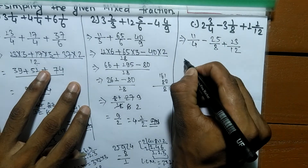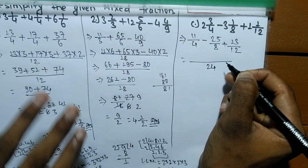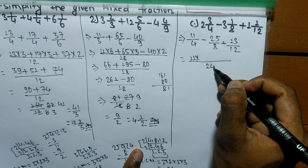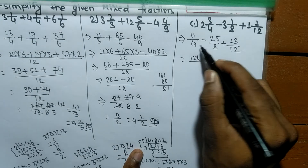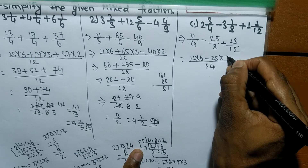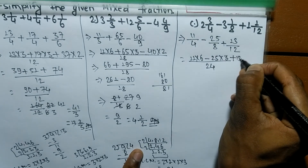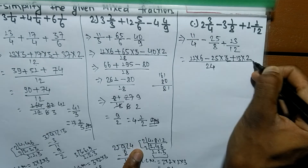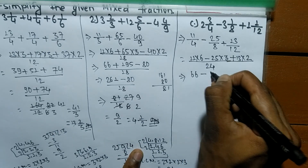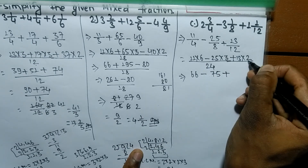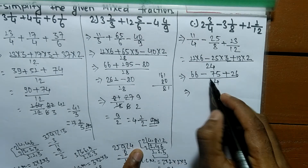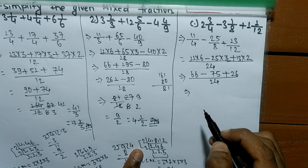Now we multiply each numerator by the quotient of LCM divided by the respective denominator. So 11 into 24 divided by 4 means it is 6, minus 25 into 24 divided by 8 means it is 3, plus 13 into 24 divided by 12 means it is 2. So now it is 11 times 6 means 66, minus 25 times 3 means 75, plus 13 times 2 means 26, all by 24.